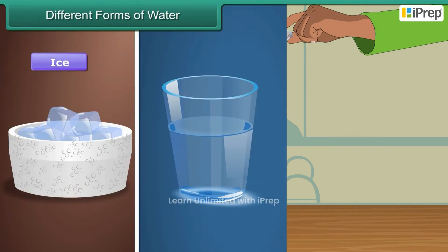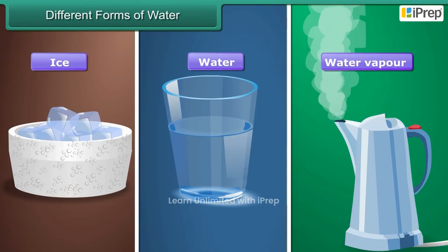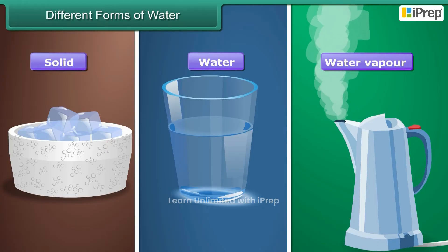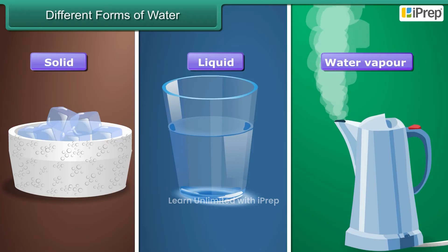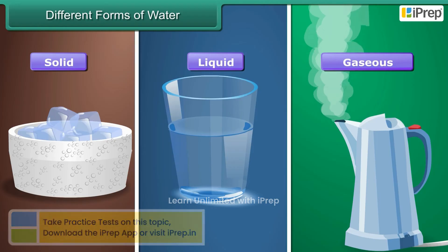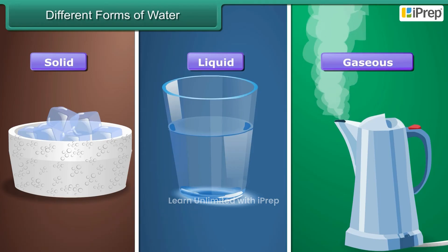Ice, water and water vapour are the three forms of water. Ice is the solid form, water is the liquid form, and vapour is the gaseous form. Water changes from one form to another when we heat or cool it.